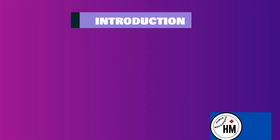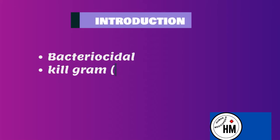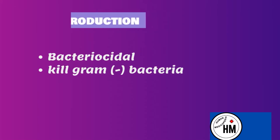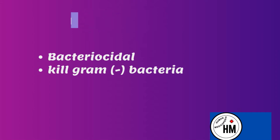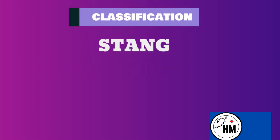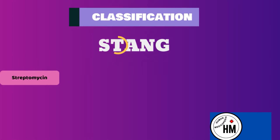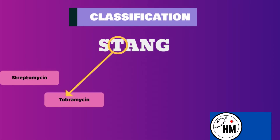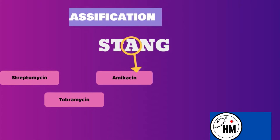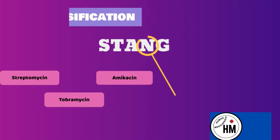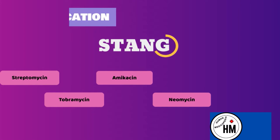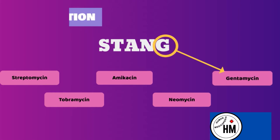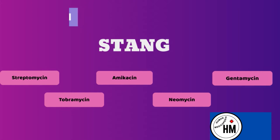Aminoglycosides are bactericidal drugs that kill gram-negative bacteria. For the classification of aminoglycoside drugs, the mnemonic is STANG, which stands for Streptomycin, Tobramycin, Amikacin, Neomycin, and Gentamicin. An important point to note is that STANG has no effect on anaerobic bacteria.